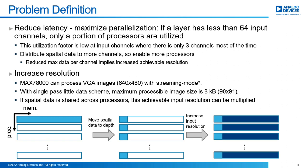Another fact is that for most CNN models, they start with fewer channels but greater spatial resolution. For parallel CNN accelerators, this means only a small portion of available processors are being used, and they have a huge load because the resolution is higher for them. We thought if we can find a way to move data from the spatial dimension to the channel dimension, we can employ more available processors and reduce the load of active processors. If processors have their own data memory, we can even increase the processable resolutions with this method.